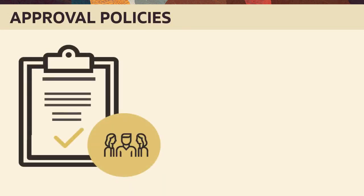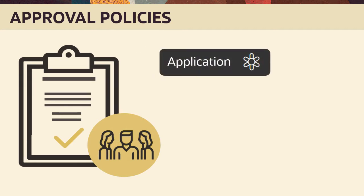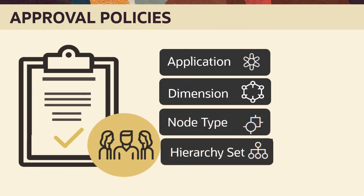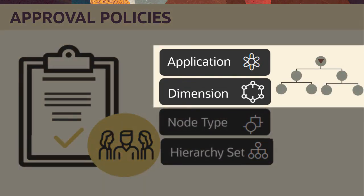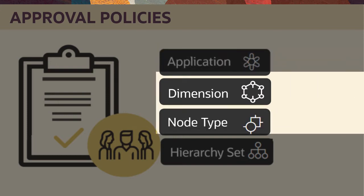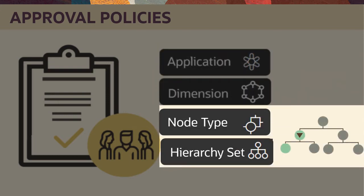Approval policies specify who can assess and take action on requests. You can apply policies at the application, dimension, node type, or hierarchy set level. Policies at the application or dimension level tend to be broad, applying settings to all enterprise data in an application or to all members in a dimensional hierarchy or container. Policies at the node type or hierarchy set level are more granular for reviewing and implementing a finer level of change.